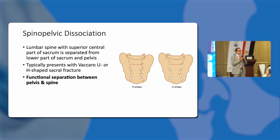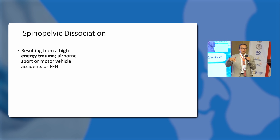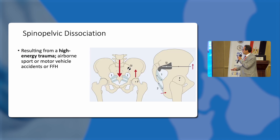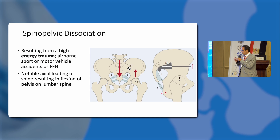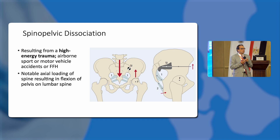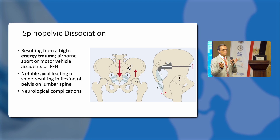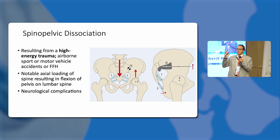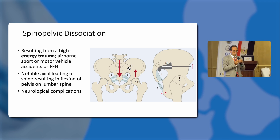There is a functional separation between pelvis and spine. Usually it occurs in very high energy trauma, resulting from axial loading in airborne sports like parachuting, falling from heights, suicide jumpers, and vehicle accidents. The spine is driven into the pelvis and the two femoral heads push the pelvis up, so the pelvis goes up and the spine goes down, causing flexion of the pelvis over the lumbar spine. When we speak about spinopelvic dissociation, this means bilateral, because unilateral cases are much simpler and more frequently operated.